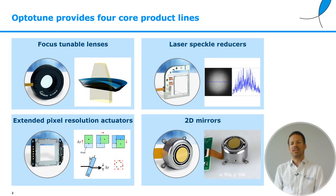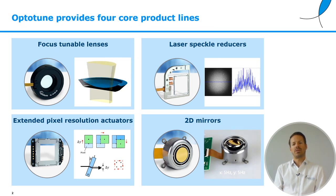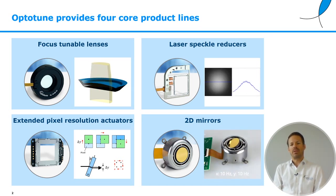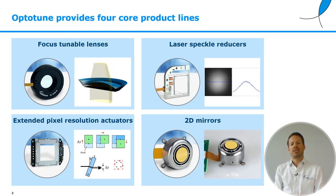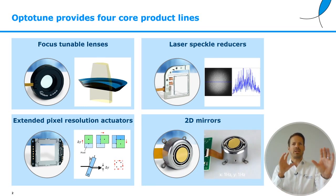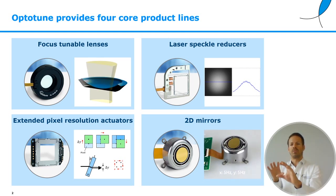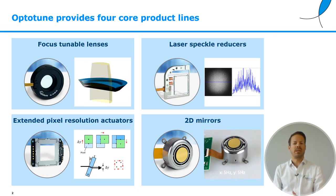2D mirrors are a beam steering solution. You see a very large mirror that tips and tilts in two directions at large angles. That can be used to scan a laser, for example in LiDAR where you need a big field of view. But also in imaging systems, you can bounce a camera image off the mirror and address different areas in your field of view to get higher resolution or stitch the image together.